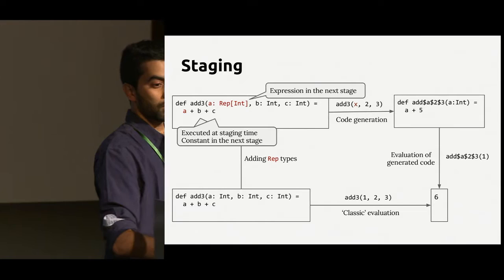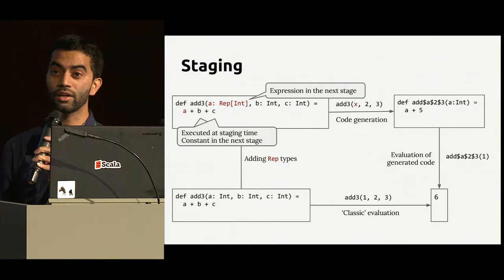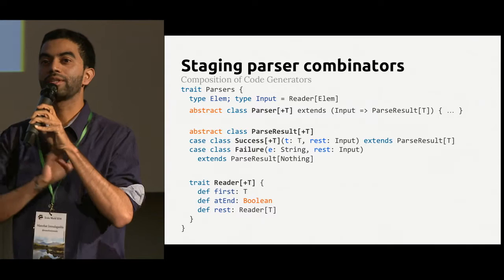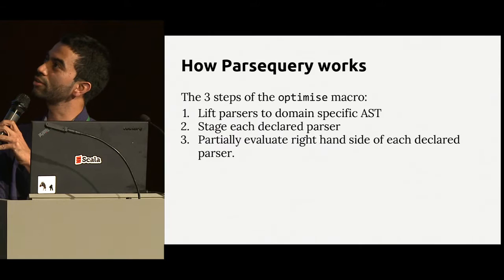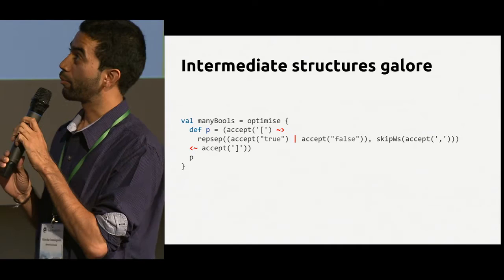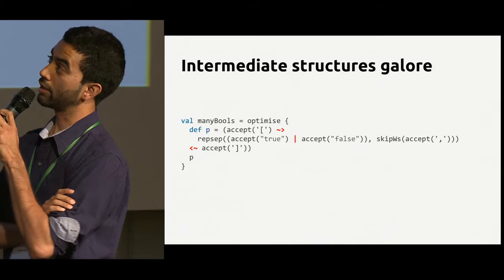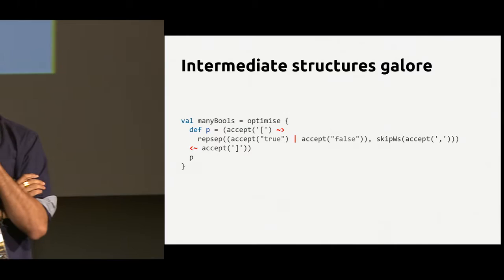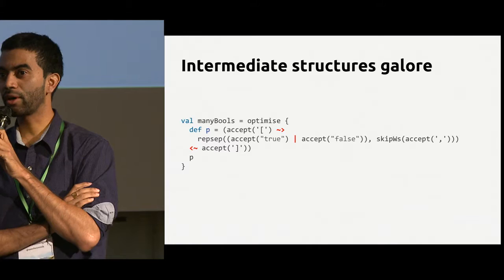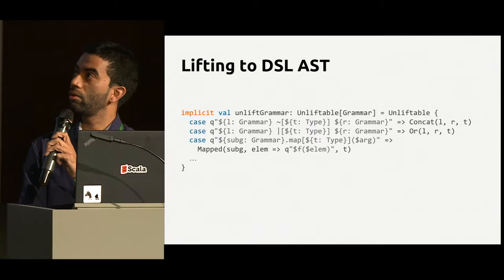What you're doing here is identifying what parts of your computation are static and what parts are dynamic. In this example the static computation was B plus C and the dynamic computation was A plus 5. We can use this idea for parser combinators. In the optimized scope we always know statically how the parsers are composed — the tilde, the or, the rep, the accept — all these combinators are static compositions. The only thing that is dynamic is running the parser on an input at run time. Everything else can be partially evaluated away.